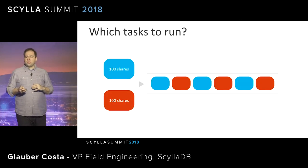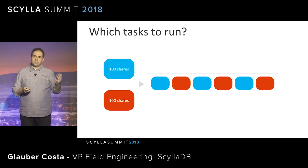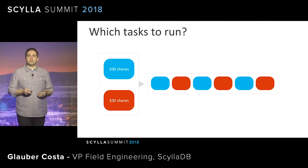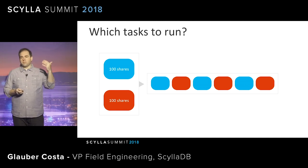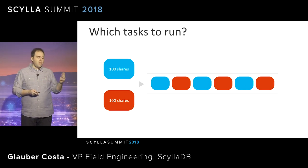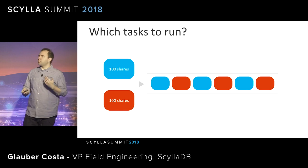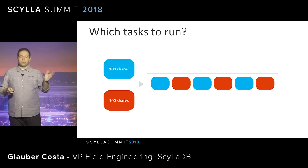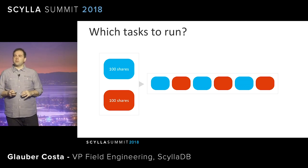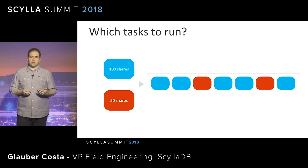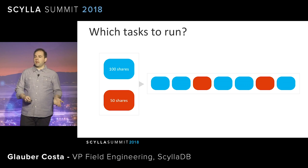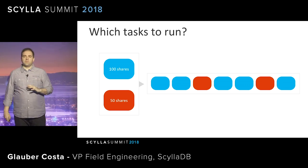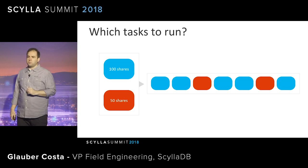All of this is based on shares — both the CPU scheduler and the I/O scheduler use shares. If the blue class has 100 shares and the red class has 100 shares, they run alternately: blue, red, blue, red. But if I change the red class to 50 shares, I'll be running the blue class a lot more. This is the same mechanism for both the I/O scheduler and the CPU scheduler.